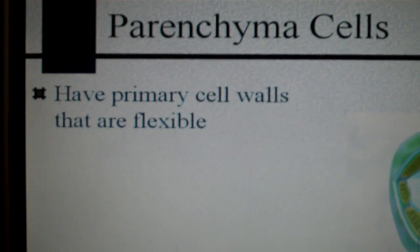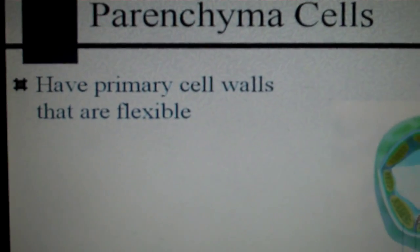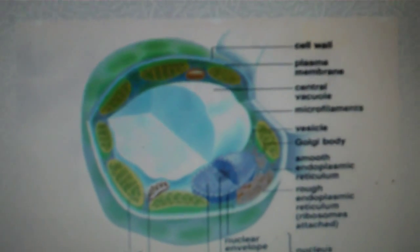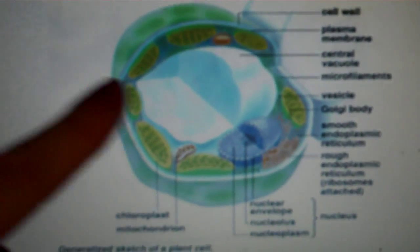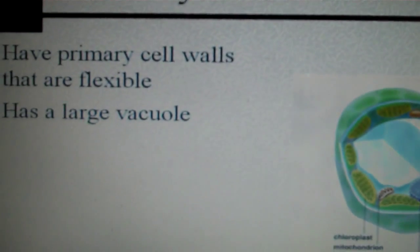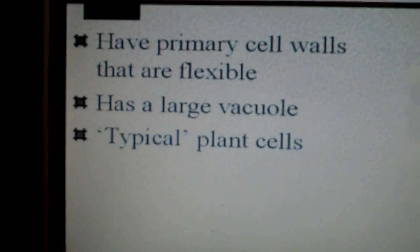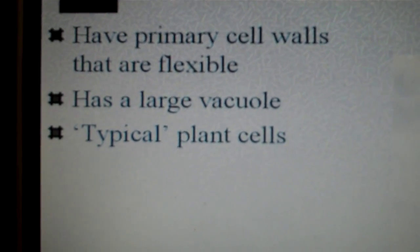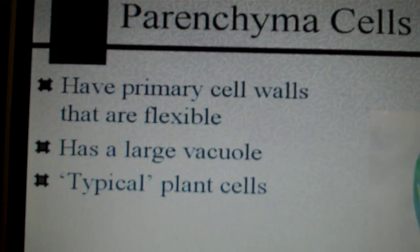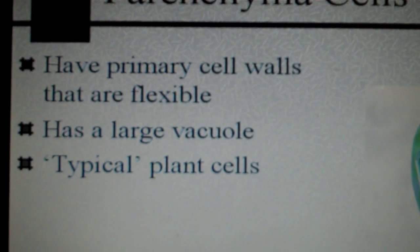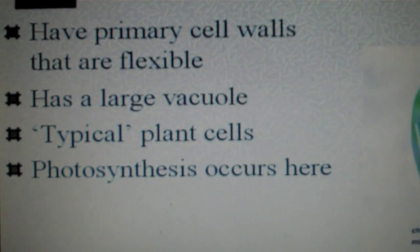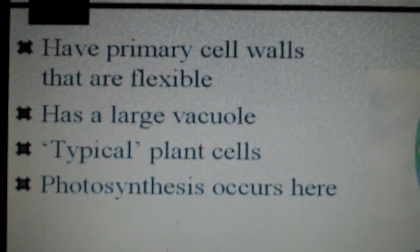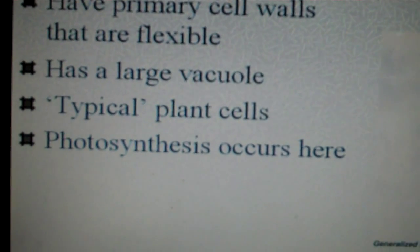Parenchyma cells have primary cell walls that are flexible. They have a large vacuole — you can see here in this typical plant cell. The center part here is the large vacuole. They're typical plant cells, so when you study plant cells in your general biology class and compare them to animal cells, you are studying the parenchyma cells. This is where photosynthesis occurs, so you would find parenchyma cells in leaf tissues, in the mesophyll layer.